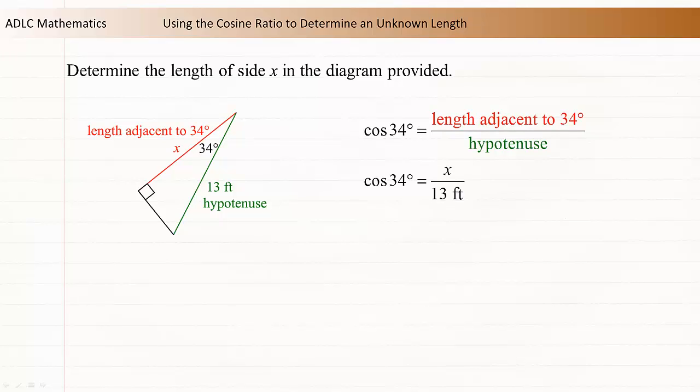Substitute x for the length adjacent to the 34 degrees and substitute 13 for the hypotenuse. x is divided by 13.